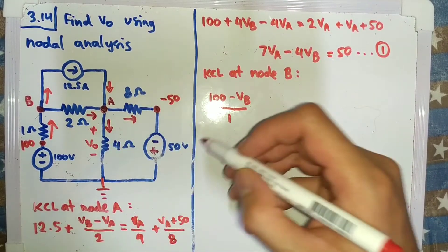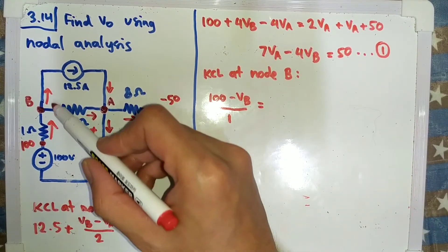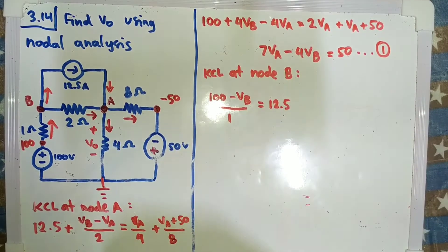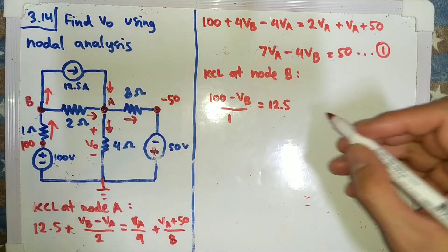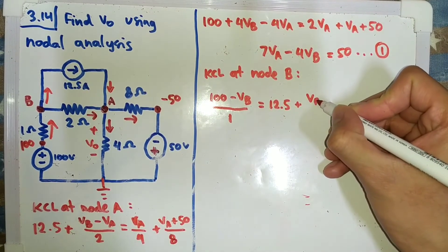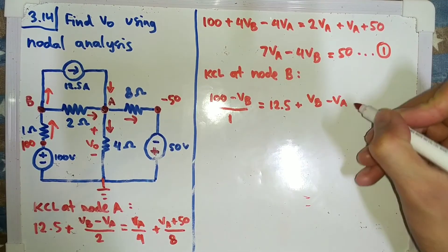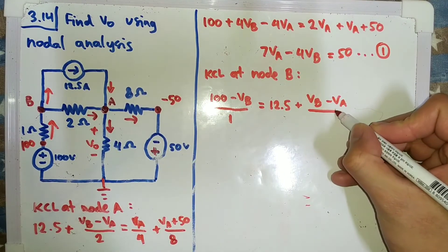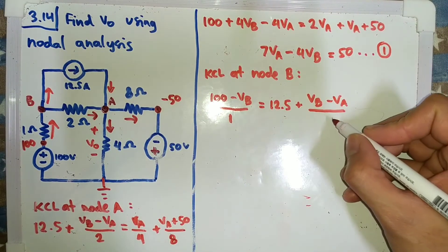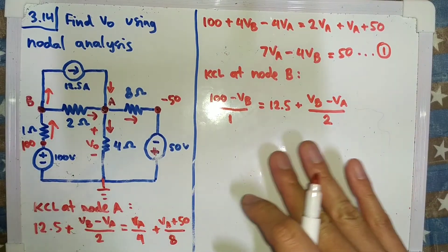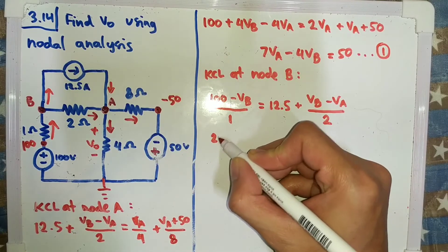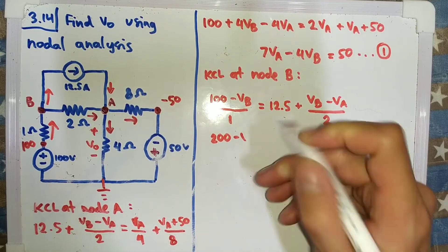We will have the current that goes in is equal to the current that goes out. So the current that goes in is here, 100 minus VB over 1. There is no other current that goes in, so now the current that goes out, this one is 12.5, and then this one is VB minus VA over 2. Now we multiply both sides by 2, 200 minus 2VB.